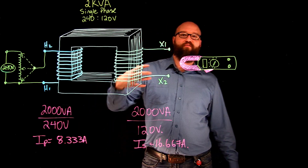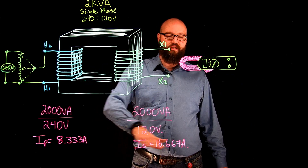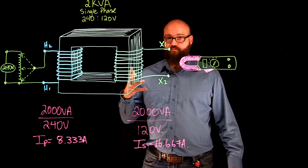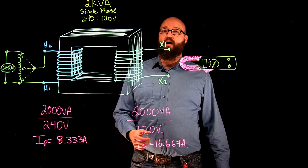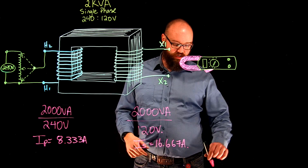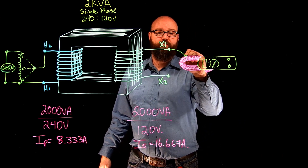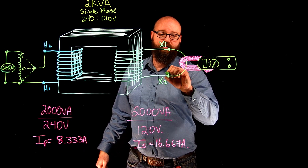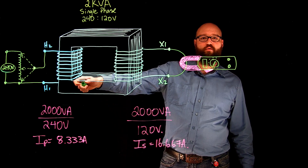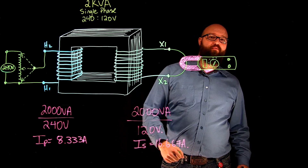That's with the transformer fully loaded delivering a maximum 2 kVA, and that's what we want to use — this 16.667 amps to determine what the impedance voltage is. So just like the name describes, we are going to physically short out the secondary on our transformer, but we're going to run it through an ammeter, because we're going to use that ammeter to monitor as we slowly increase the voltage and watch the secondary current climb until we hit that rated secondary current.